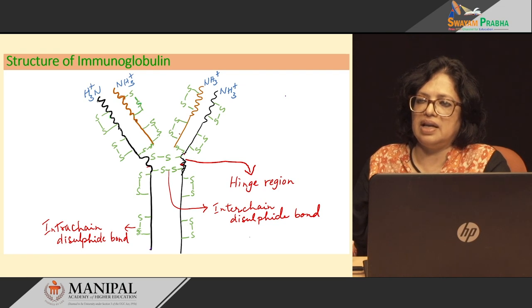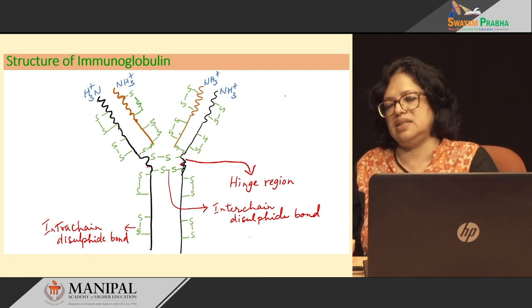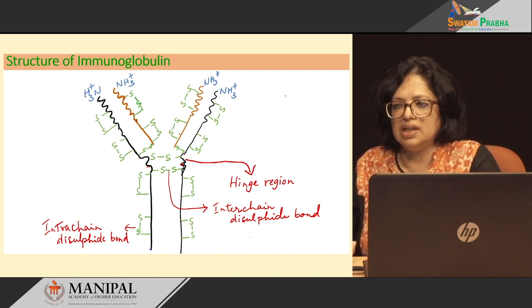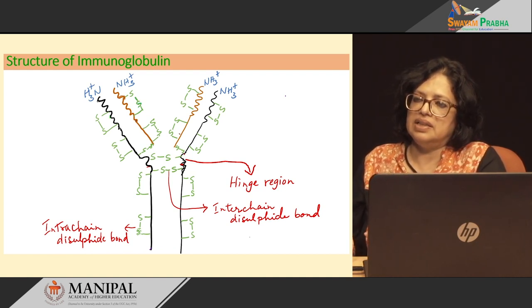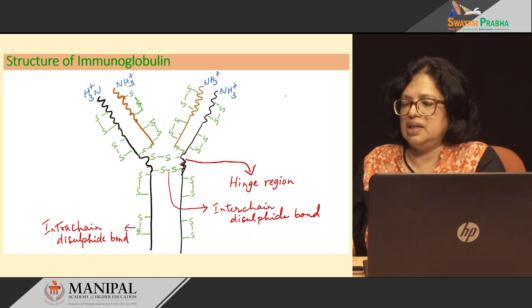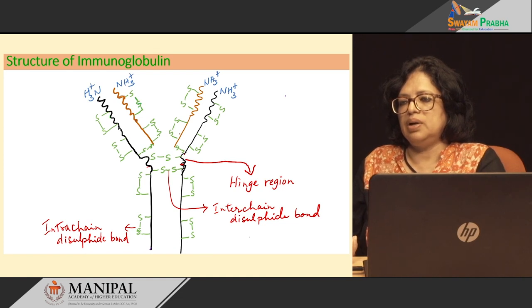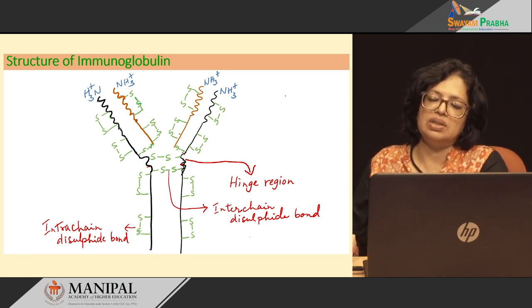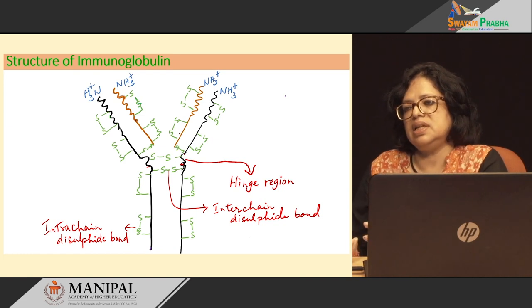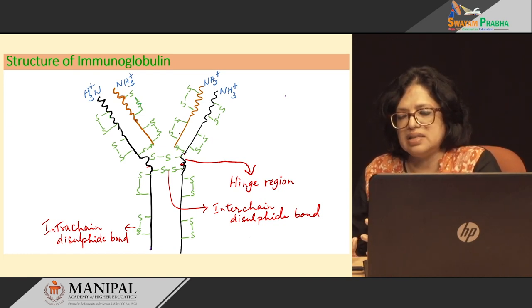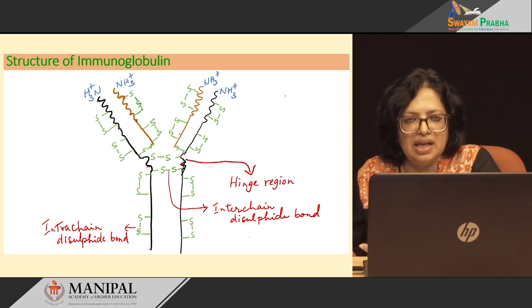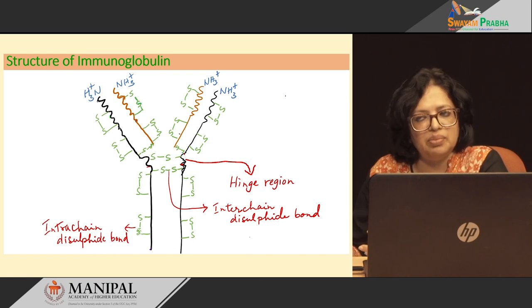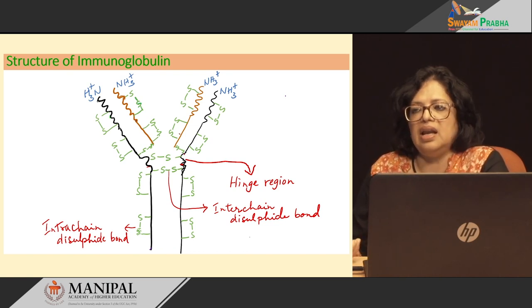These are the inter-chain disulphide bonds which link the heavy chain with the light chain. We also have inter-chain disulphide bonds in the hinge region between the 2 heavy chain molecules. There are a number of ways by which the immunoglobulin structure is stabilized. This is required because the immunoglobulin is traversing the blood at high speed as the blood is being pumped by the heart. So if it loses its structure, it ceases to bind any antigen. Its job is to get hold of antigen and bind them and finally allow their destruction.